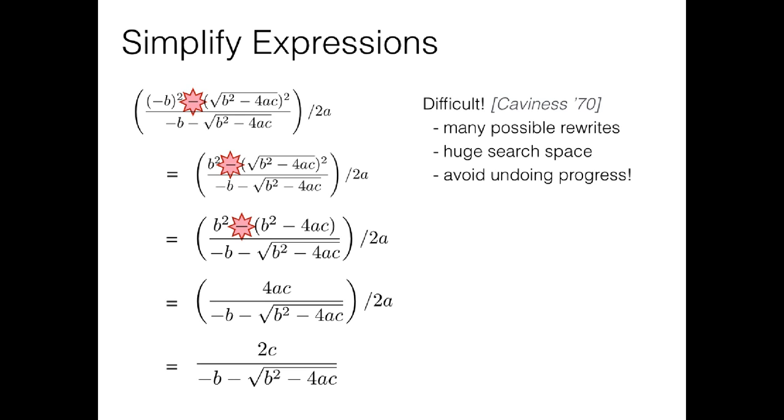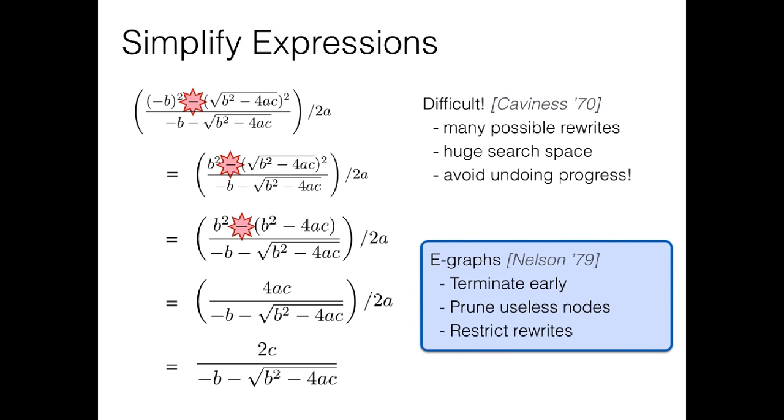In Herbie we attack this problem using insights from the SMT solving literature, namely equivalence graphs. These allow us to track sets of nodes that can be rewritten into each other. But in Herbie we need these to be very fast, because they're the core of a search algorithm. So we have some tricks to terminate the usual eGraph algorithm early, and to prune nodes that aren't going to be useful to us. You can check our paper for details on those.